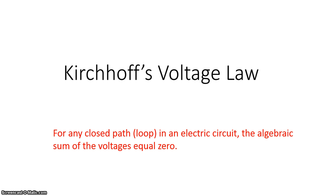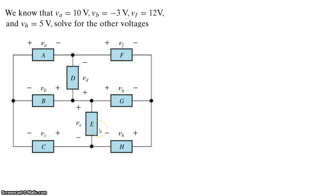Let's take a look at this simple example circuit. We have a total of eight circuit elements labeled A through H. Four of the circuit element voltages are given and we're asked to find the rest. VA is given as 10, VB is given as minus 3, VF is given as 12, and VH is given as 5.